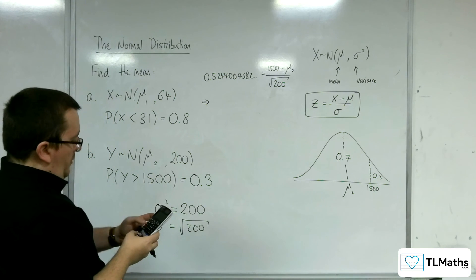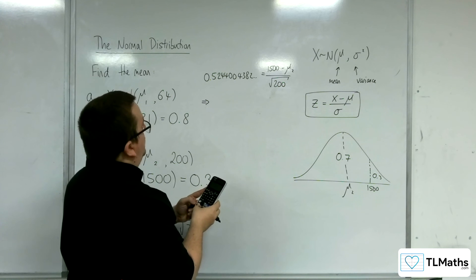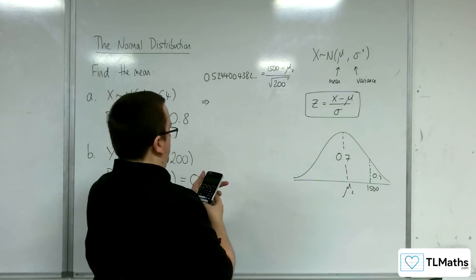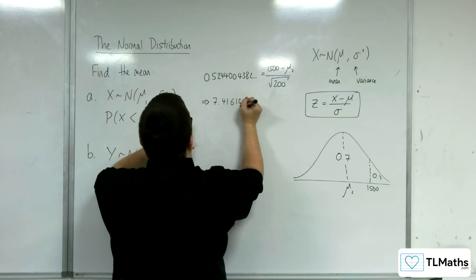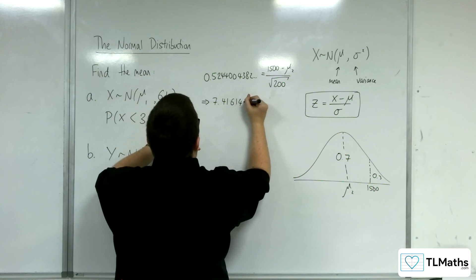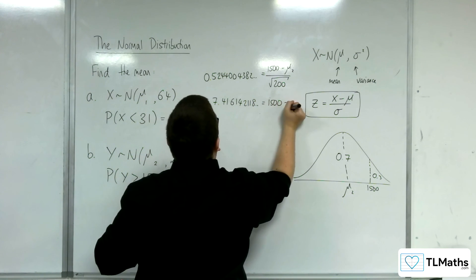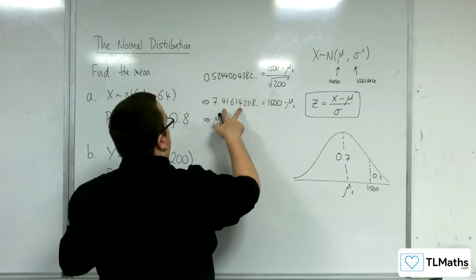So what I want to do is multiply the root 200 by the 0.5244004382. So 7.416142118 is equal to 1500 take away mu2.